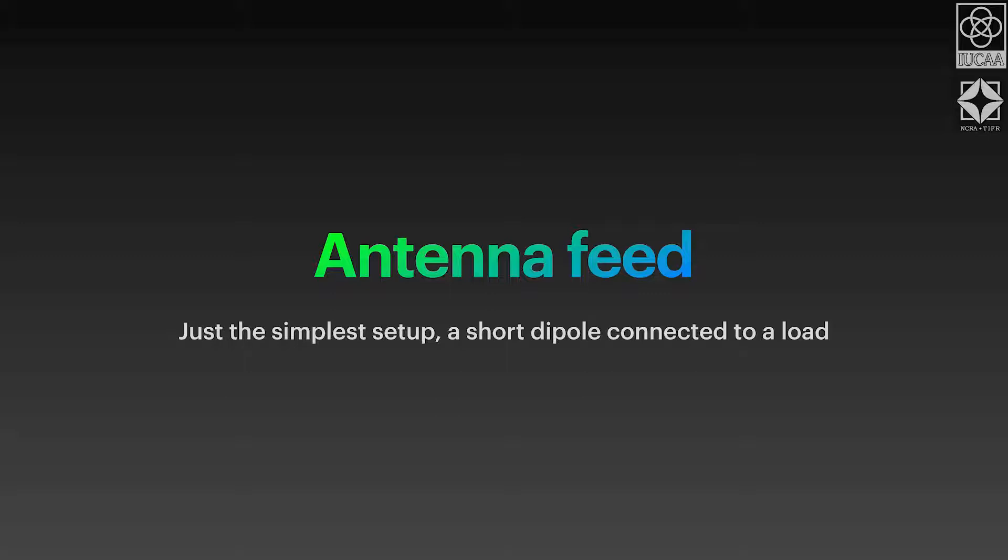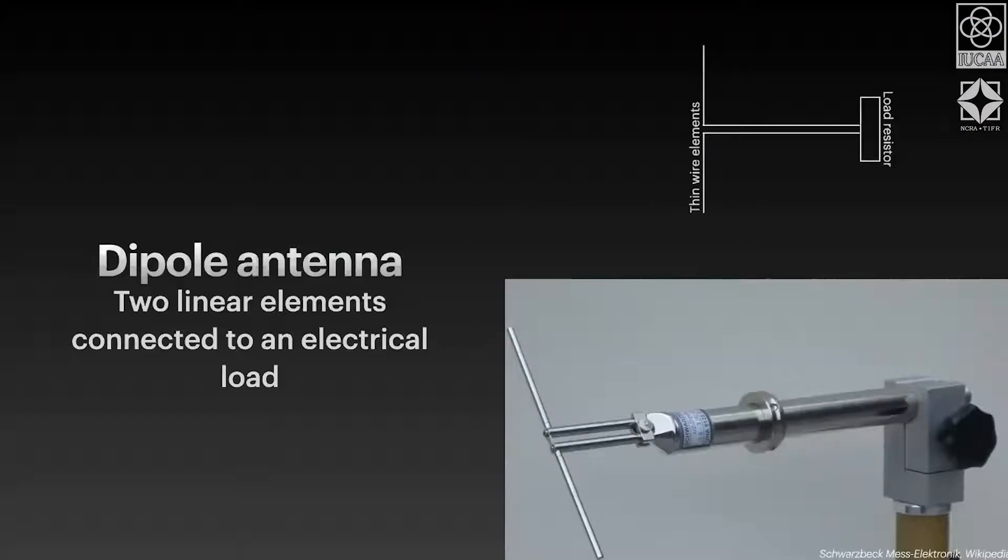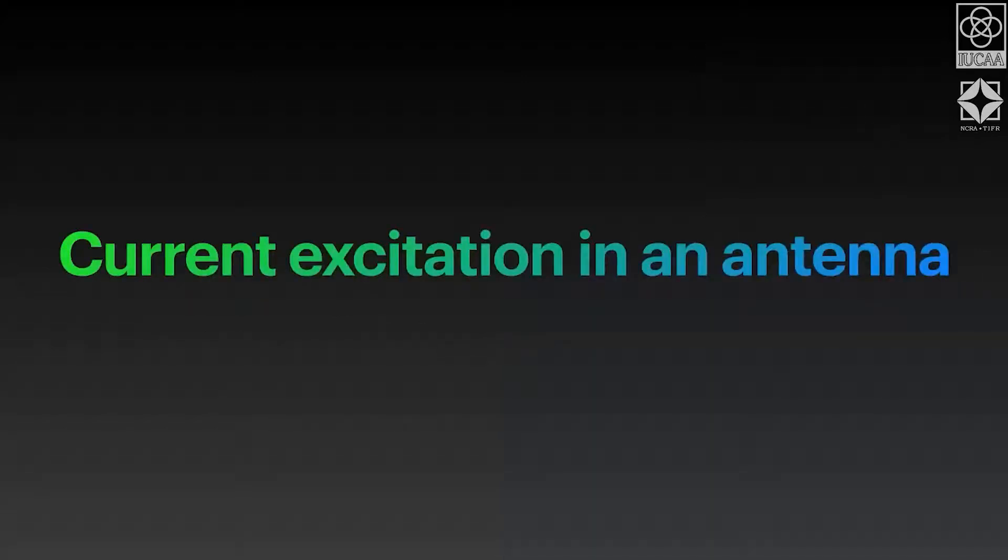Okay, so we'll jump right into it. We'll look at the antenna feed. Now antenna feed is essentially the set of elements in a telescope which acts based on the electric field that is incident on it and produces a current. So we go to the most simplest setup, which is a dipole antenna. You have two linear elements. If you see, there's a schematic that is drawn on the right side. There are two elements, one oriented up and one oriented down, and they're connected to an electrical load. This is pretty much it, the simplest form. And if you look at an actual picture of a dipole antenna feed, you'll see that it looks pretty much like the schematic I've shown.